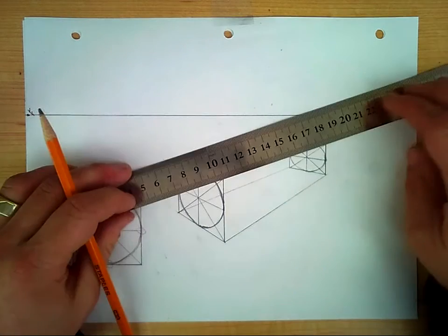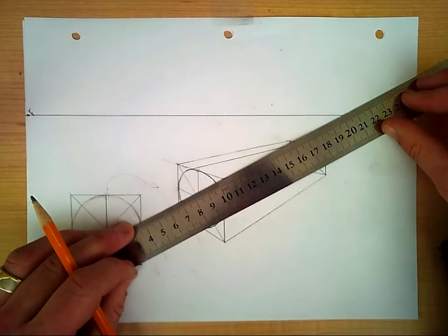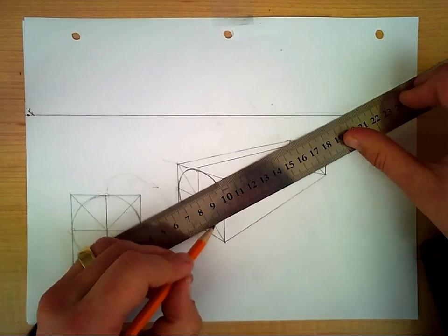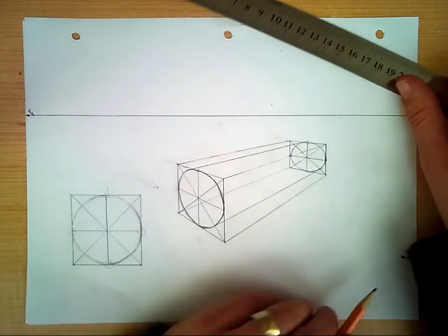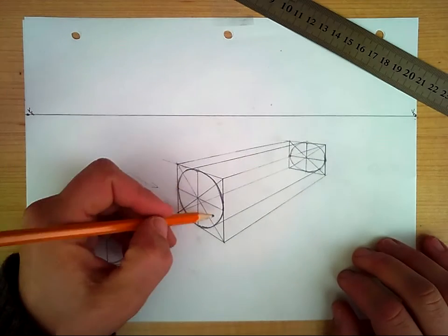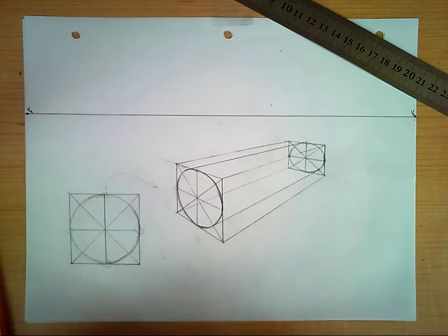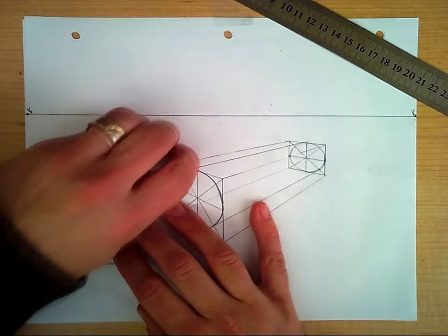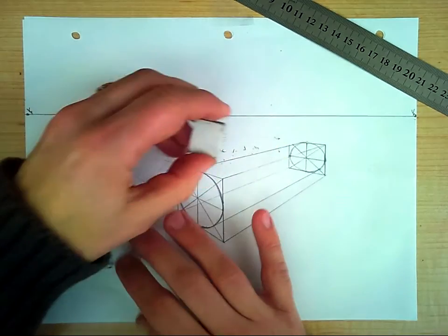We do the same thing on the bottom. Come down to the bottom most point that we can see the ellipse and connect that back this way. Now we have a whole lot of extra guidelines to erase because the box that the cylinder is contained within is now extra.